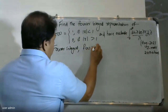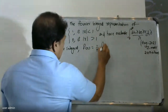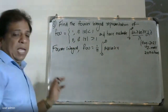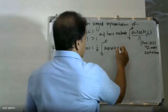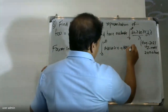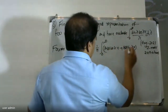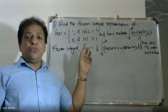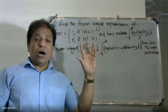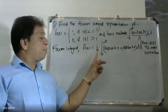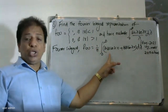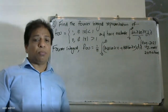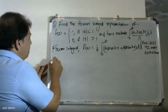The Fourier integral formula: f(x) is equal to one by pi, integral from zero to infinity of A(lambda) cos(lambda x) plus B(lambda) sin(lambda x) d lambda. This is the Fourier integral formula, and A(lambda) and B(lambda) are the coefficients.